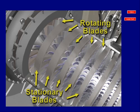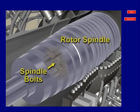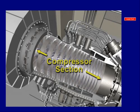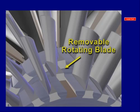Stationary blades, or blade rings, are positioned before each of the sets of rotating blades. The positioning of these stationary blades efficiently directs the air to the oncoming rotating blades. The rotor is made up of a bladed compressor spindle and a bladed turbine spindle that is bolted together to make a single shaft. To view an animation of the compressor, click on the button provided. The compressor consists of 16 rows of individually removable rotating blades.